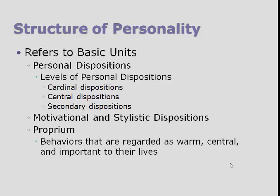Secondary dispositions might include preferences like what kind of food you enjoy or what music you listen to. Your taste in music can change over time, it's part of your personality, but it doesn't necessarily predict your behavior and isn't obvious to most people in your life. Unless you're a musician — in which case it might become a central disposition. So cardinal dispositions are overruling passions, central dispositions are core personality traits, and secondary dispositions are preferences that can shift over time.